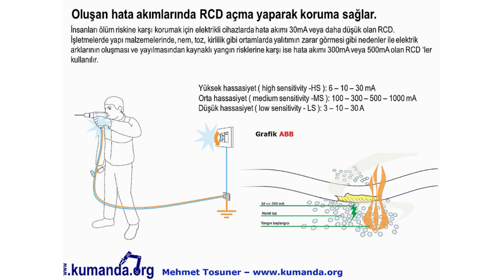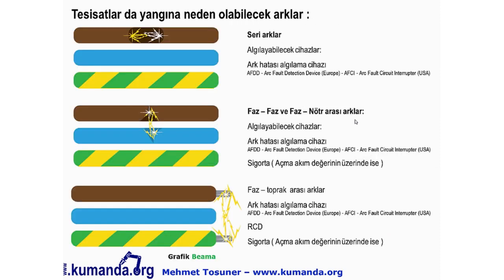30 mA insanların can güvenliğini sağlamak içindir. Eğer yangın riski varsa, 300 mA yangın riskine karşı koruyan RCD'dir. Tesisatlarda yangına neden olabilecek arklar; seri arklar (kablo kırılması, temas trenci, bağlantı gevşekliği) ve paralel arklar (faz-faz veya faz-nötr arası) şeklindedir. Seri arkları algılayabilecek cihazlar ark hatası algılama cihazlarıdır: Avrupa'da AFDD, Amerika'da AFCI olarak isimlendirilir.